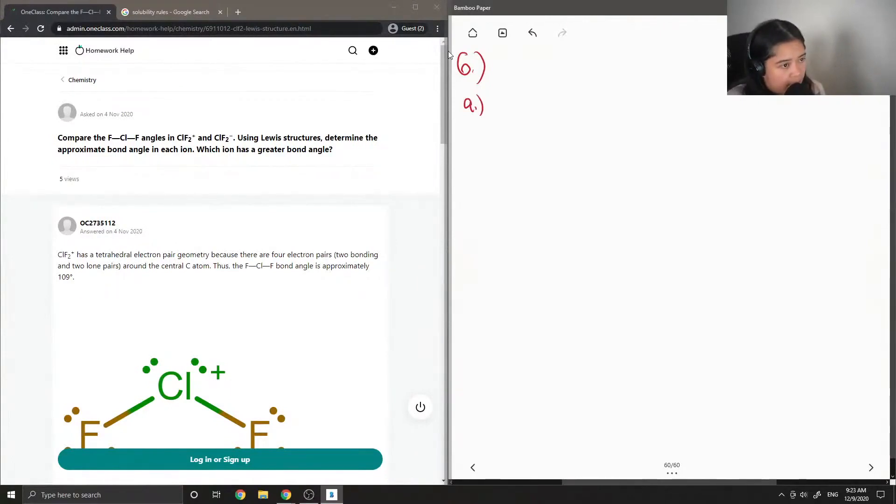First let's look at ClF2+. To draw its Lewis structure, we need to first figure out how many valence electrons are in the compound. There is one chlorine atom that has seven valence electrons, and fluorine also has seven valence electrons, but there are two of them. So there will be 14, and lastly this compound has a positive charge. So I'm going to minus one electron, and this gives us a total value of 20.